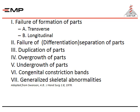The seven Swanson categories are: one, failure of formation of parts, either transverse or longitudinal; two, failure of differentiation or separation of parts; three, duplication of parts; four, overgrowth of parts; five, undergrowth of parts; six, congenital constriction bands; and seven, generalized skeletal abnormalities.